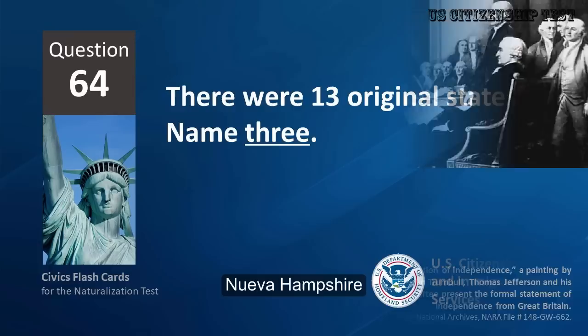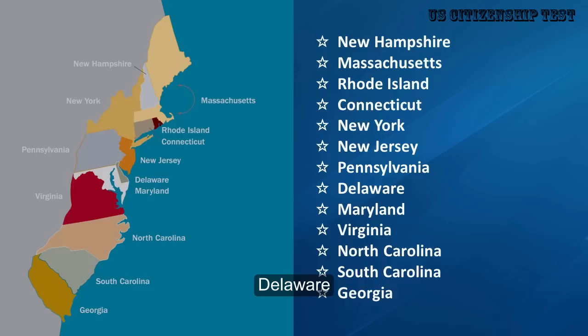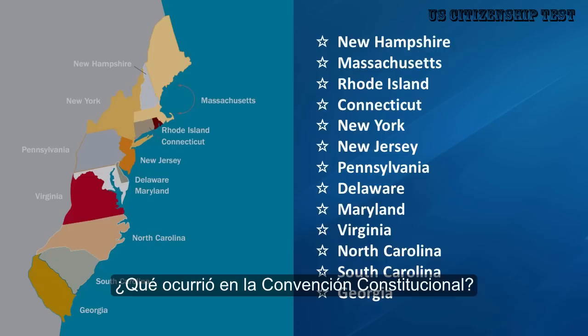There were thirteen original states. Name three. New Hampshire, Massachusetts, Rhode Island, Connecticut, New York, New Jersey, Pennsylvania, Delaware, Maryland, Virginia, North Carolina, South Carolina, Georgia.